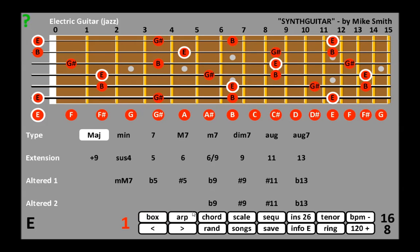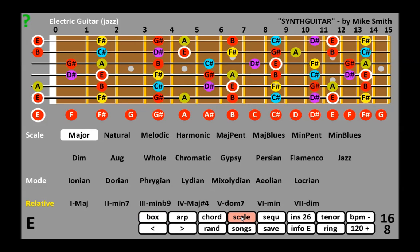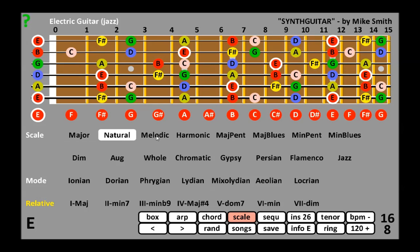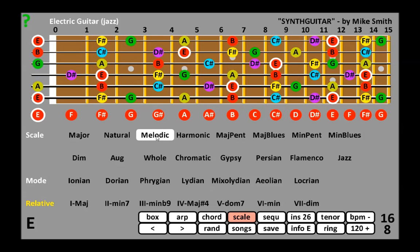Scales can be shown by touching Scale and choosing one from the table. Arpeggio plays the notes of a chord or a scale at random, down or up.